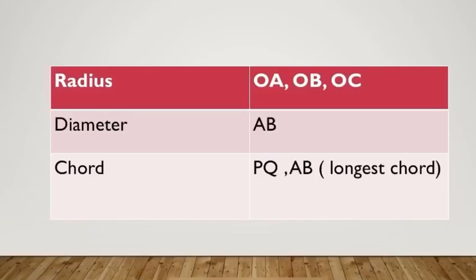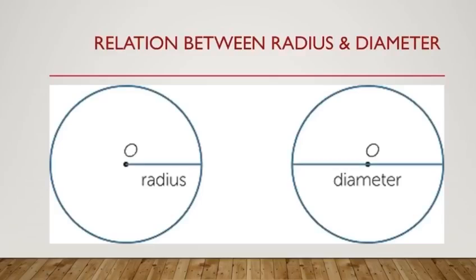Very good. Radius is OA, OB and OC. Diameter is AB and chords are PQ and AB.